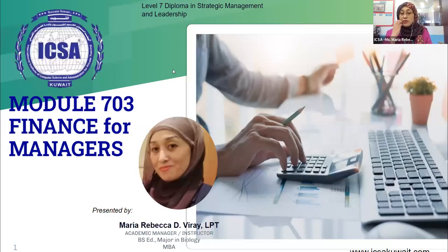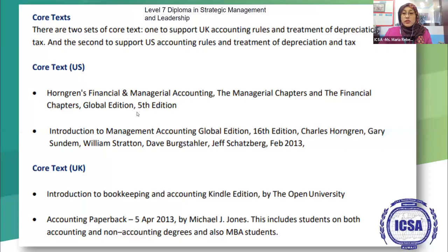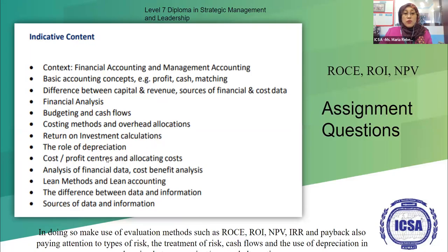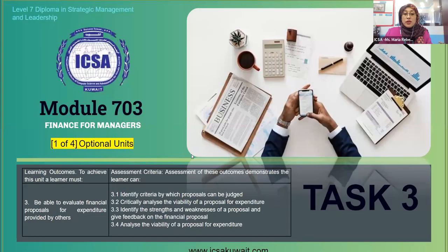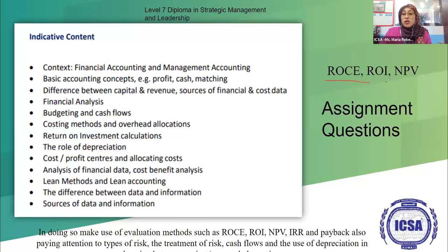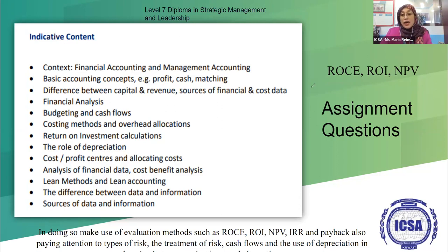Hello everybody and good day. This is our recorded class for module 703, Finance for Managers, specifically for Task 3. Here are the contexts for you to remember and also the indicative content. We are now covering cost and profit centers, allocating costs, and analysis of financial data. Before we answer the assignment questions, I'd like to first focus on ROCE, ROI, NPV, IRR, and payback.